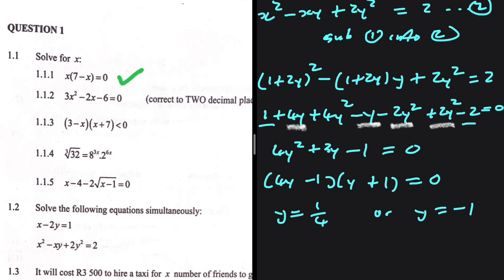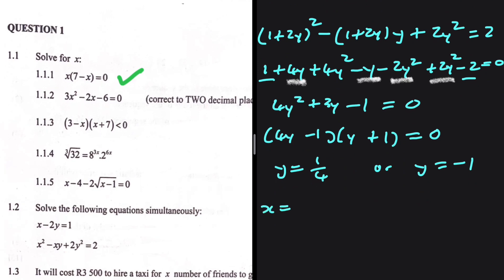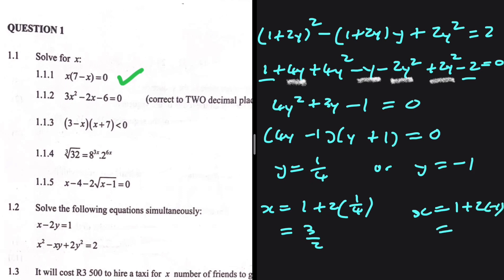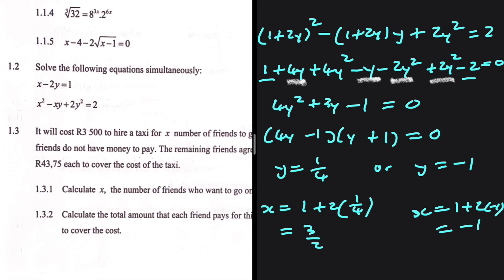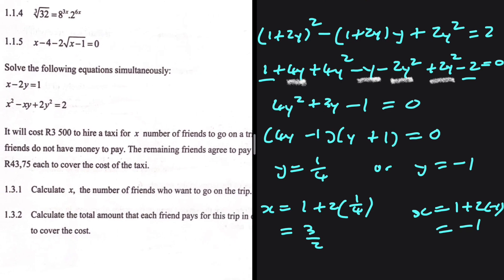When y equals 1 over 4, x equals 1 plus 2 times 1 over 4, so x equals 3 over 2. When y equals negative 1, x equals 1 plus 2 times negative 1, so x equals negative 1. That is the answer to 1.2. We'll do 1.3 in a separate video.